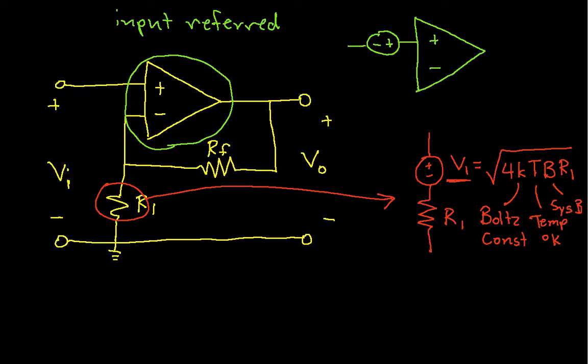...will be represented by a voltage source, which we might call V sub N, connected to the non-inverting input of the op amp, and then a noiseless op amp.